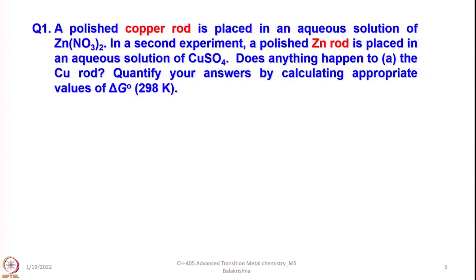Let us look into some problems related to these topics. The question is: a polished copper rod is placed in an aqueous solution of zinc nitrate. In a second experiment, a polished zinc rod is placed in an aqueous solution of copper sulfate. Does anything happen to the copper rod? Quantify your answers by calculating appropriate values of ΔG° at 298 K. From the redox potential table, you can get the values for the copper and zinc couple. The values are given here.